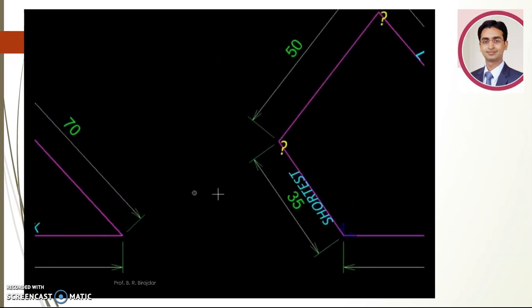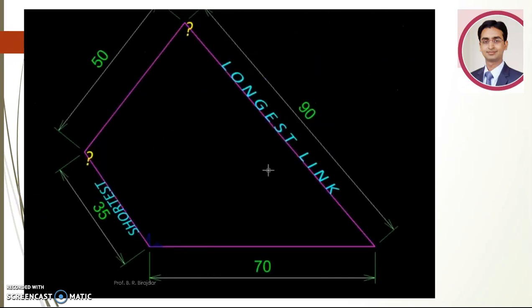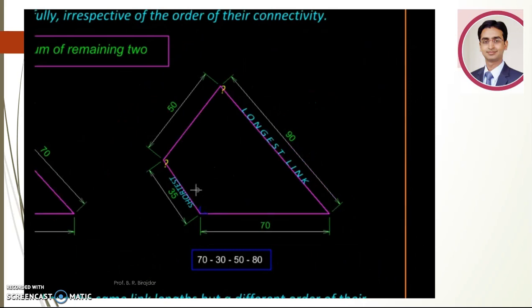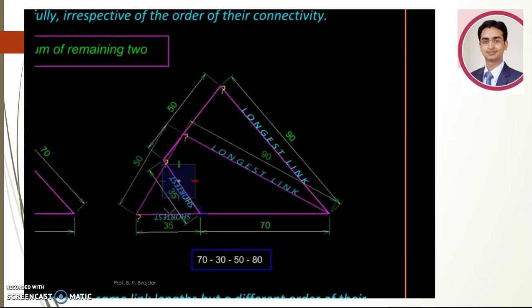It is not even necessary that the shortest and the longest link should be one next to the other as over here. We can as well have them on opposite sides. So if the link lengths satisfy Grashof's criteria, we will have a crank.